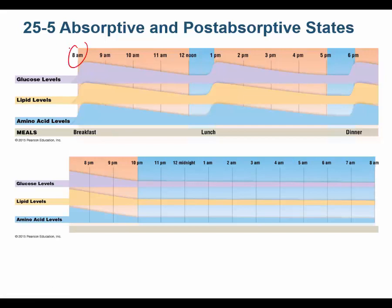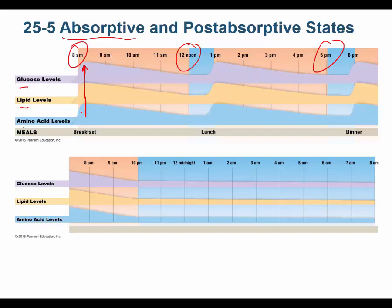Let's say you eat breakfast at 8 a.m., lunch at noon, and dinner at 5. When you eat, you are in the absorptive state — you just ate and you're absorbing all those nutrients. Levels of glucose, lipids, and amino acids all go up. As you go throughout your day and do activity, levels of all of these decline — you burn the glucose, burn the lipids, utilize the amino acids — and when they're declining, it's the post-absorptive state.